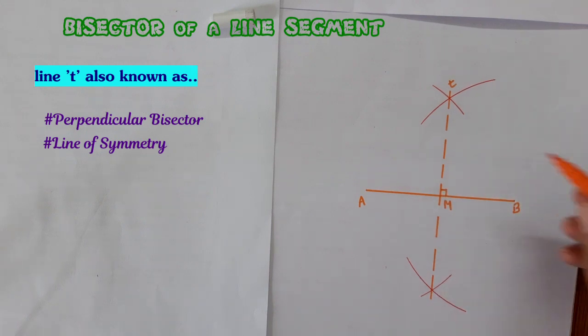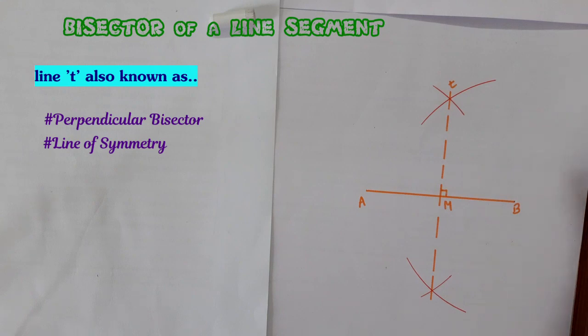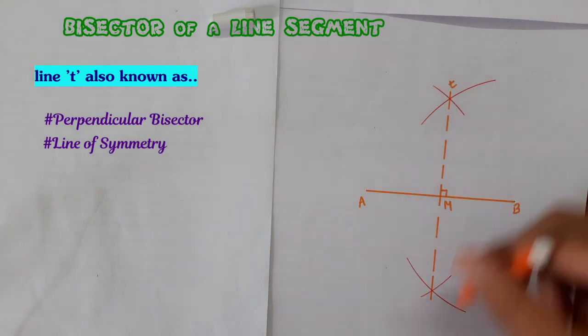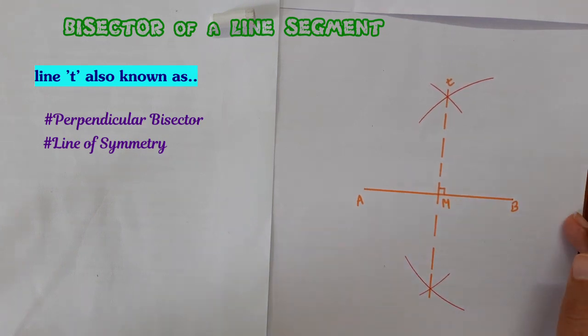This line is also known as line of symmetry. This is also like drawn to find the midpoint of the line. So we can call it by different names, different topics, but the same thing is to be done. So basic name is bisector of a line or perpendicular bisector.